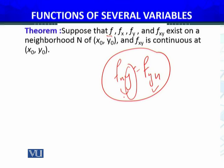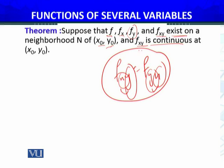The conditions are: partial derivative of f with respect to x, partial derivative of f with respect to y, and f_xy all exist in the neighborhood of (x₀, y₀). And f_xy is continuous at that point.